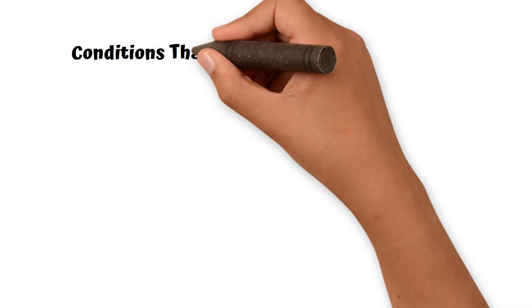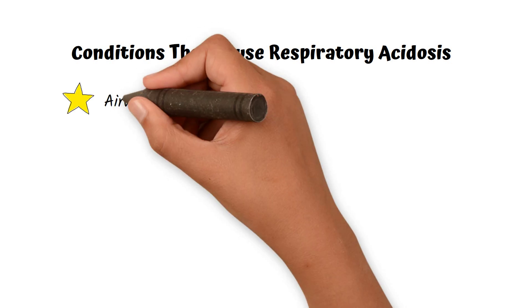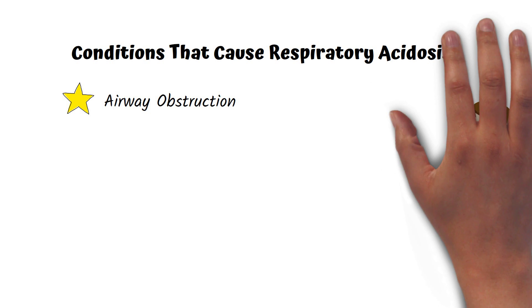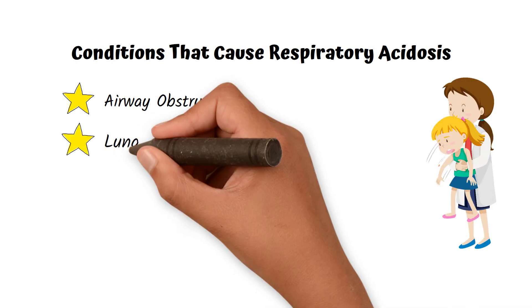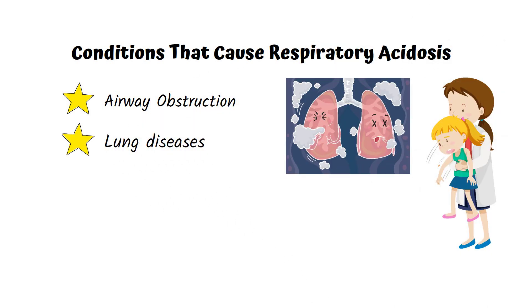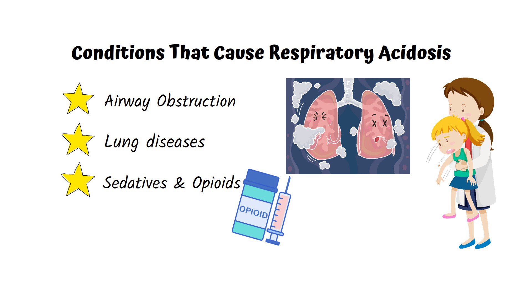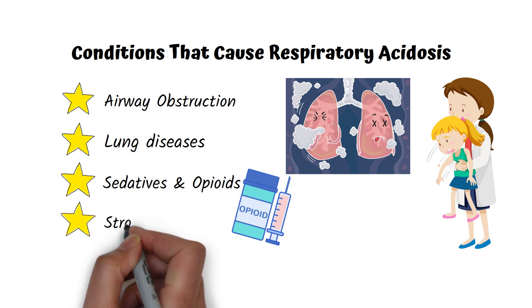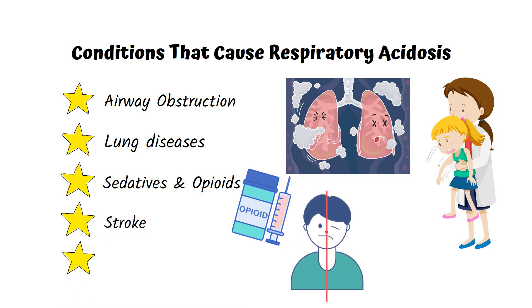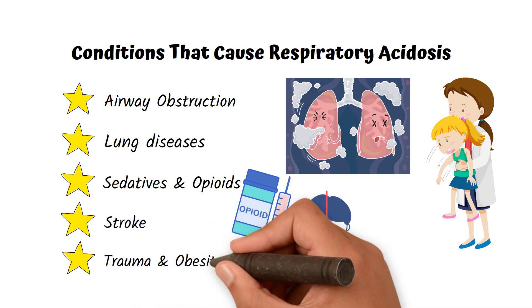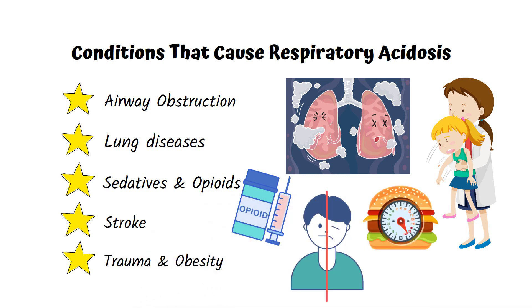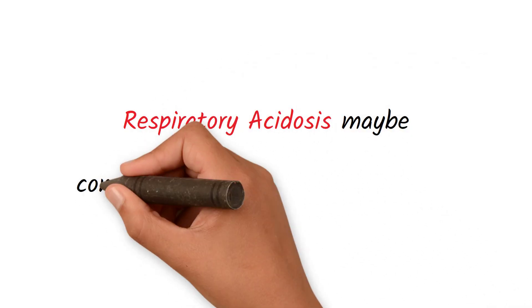A reduction in respiratory rate can lead to respiratory acidosis. This can be caused by airway obstruction by a foreign object, acute and chronic lung diseases, drugs that directly inhibit the respiratory center of the brain like sedatives and opioids, strokes, and dysfunction of the diaphragm or chest wall muscles, which can be caused by trauma and obesity. Respiratory acidosis may be compensated by metabolic alkalosis.